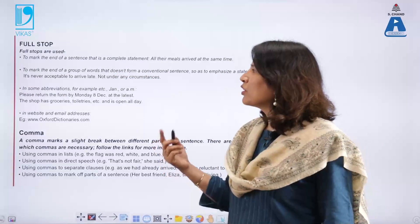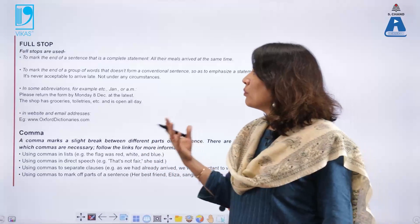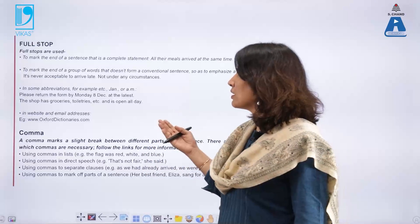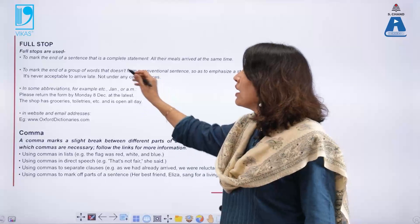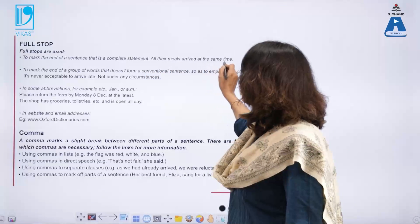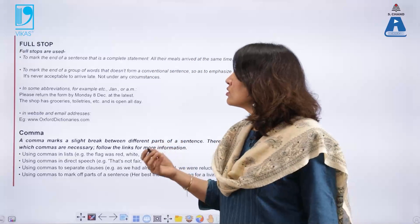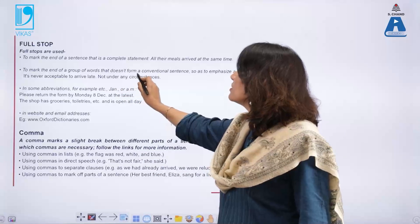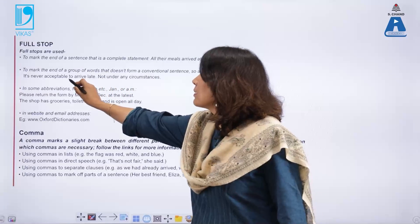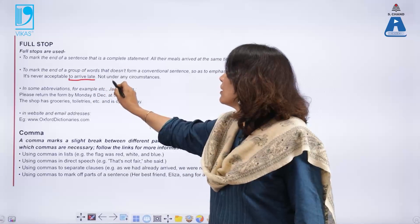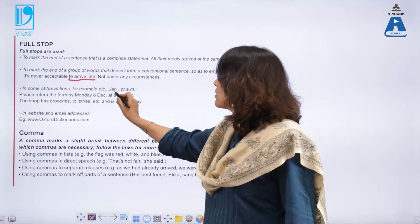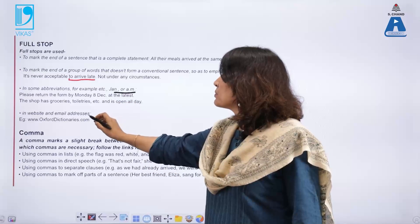Let us understand where we put a full stop — the most commonly used punctuation mark in English. We use a full stop to mark the end of a sentence that is a complete statement, for example: 'All their meals arrived at the same time.' We also use a full stop to mark the end of a group of words that does not form a conventional sentence, to emphasize a statement — for example: 'It is never acceptable to arrive late. Not under any circumstances.' We also use full stops in some abbreviations and in website and email addresses.